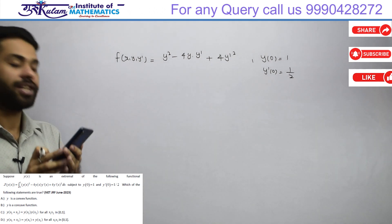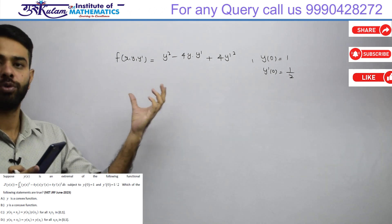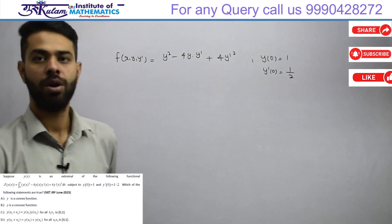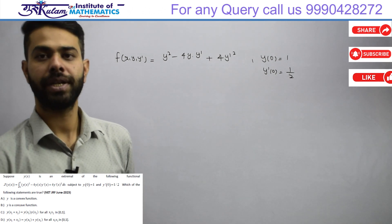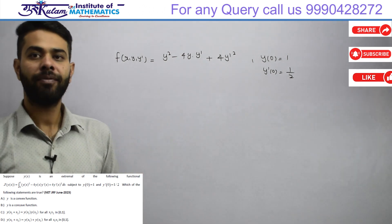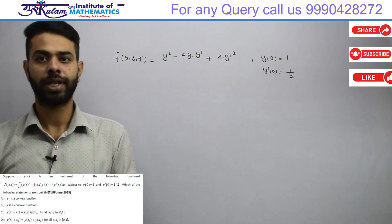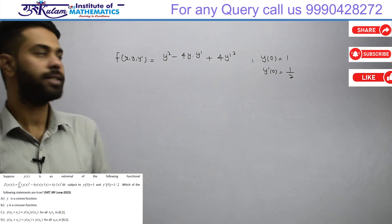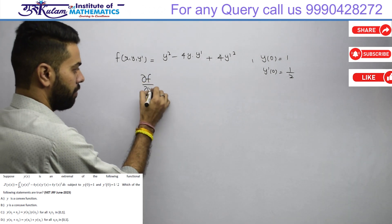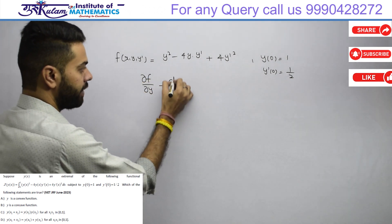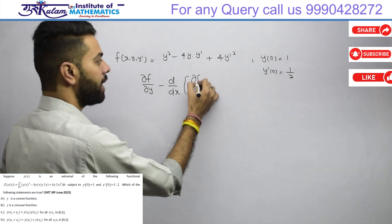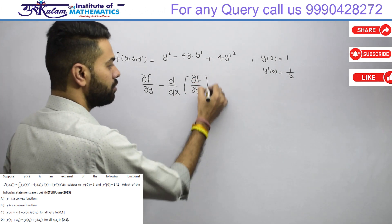आपके पास extremal find करना है और पूछा हुआ है कि वो convex होगा, concave होगा और कुछ properties के बारे में। जब भी extremal find करना है तो उसके लिए necessary Euler-Lagrange condition है: ∂f/∂y - d/dx(∂f/∂y') = 0।